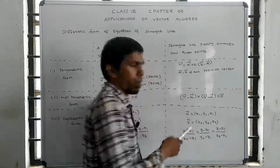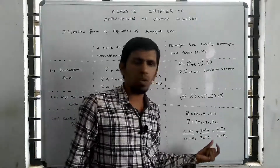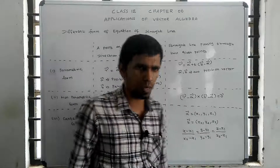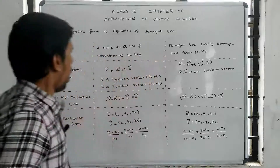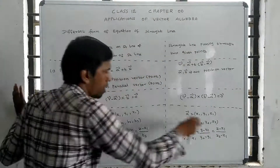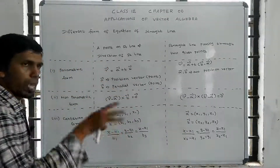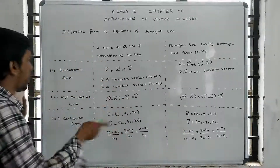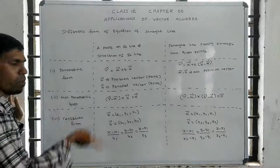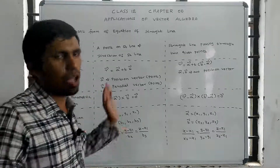The Cartesian formula for the line through two points is: (x minus x1) divided by (x2 minus x1) equals (y minus y1) divided by (y2 minus y1) equals (z minus z1) divided by (z2 minus z1). From the given data, we find the parametric form, the non-parametric form, and the Cartesian (partition) form.